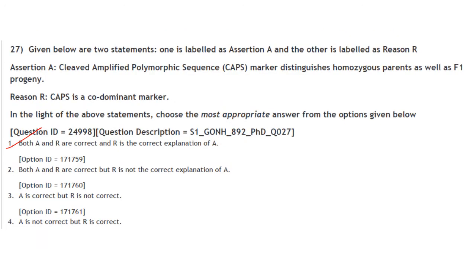Assertion: CAPS (Cleaved Amplified Polymorphic Sequence) markers distinguish homozygous parents as well as F1 progeny because CAPS is a co-dominant marker. Being co-dominant, it recognizes heterozygotes as well. Reason: CAPS is a co-dominant marker. Both A and R are correct and R is the correct explanation of A.